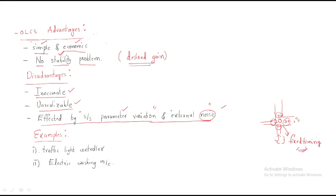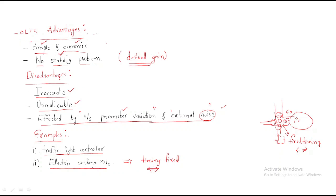This fixed timing for the traffic light system is nothing but an open-loop system. If it were a closed-loop control system, the path with more vehicles would get more time and the path with fewer vehicles would get less time. The second example is an electric washing machine — the timing is fixed whether you have one, four, or ten sets of clothes. These are two live examples of open-loop control systems.